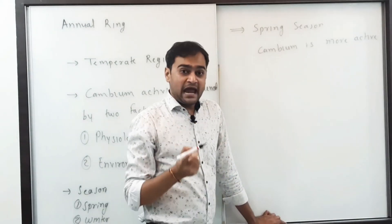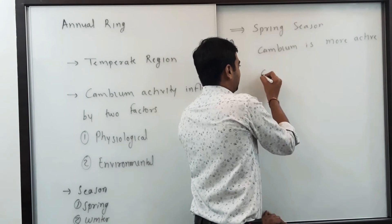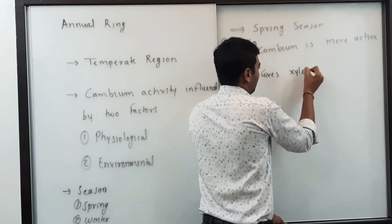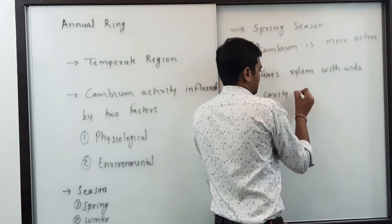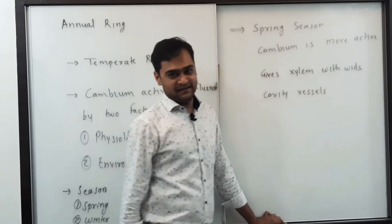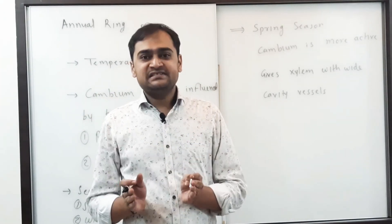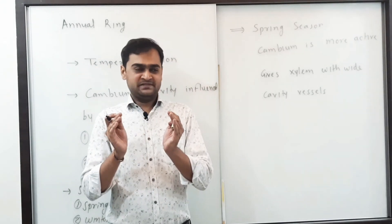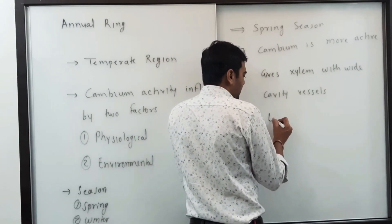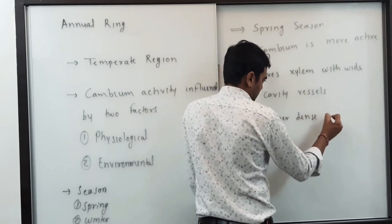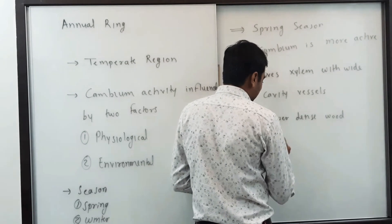When the cambium is more active, it divides rapidly and gives rise to xylem vessels having wider cavities — meaning wider, more porous pipes. Due to this, the wood formed is less dense and lighter in appearance.